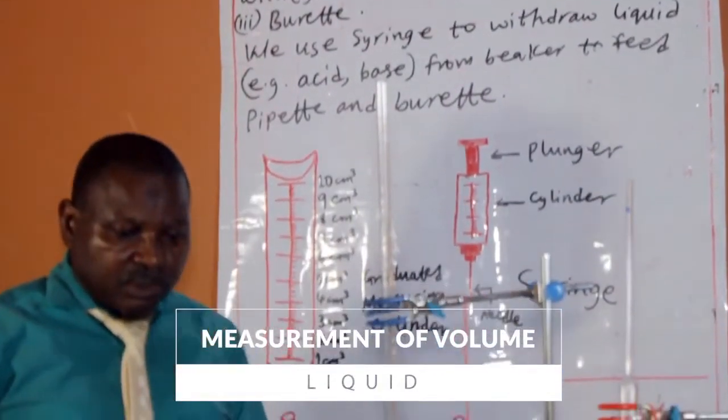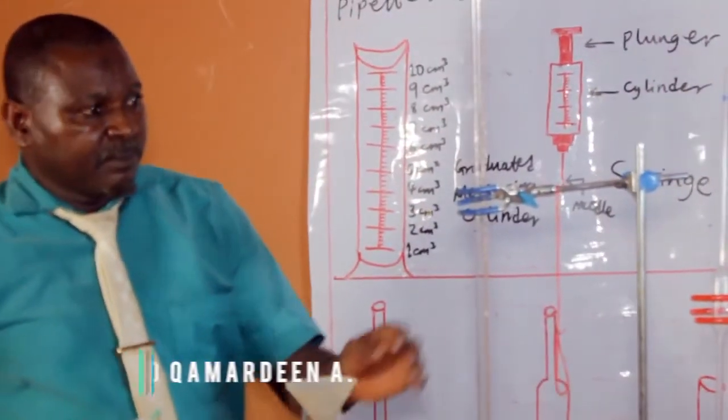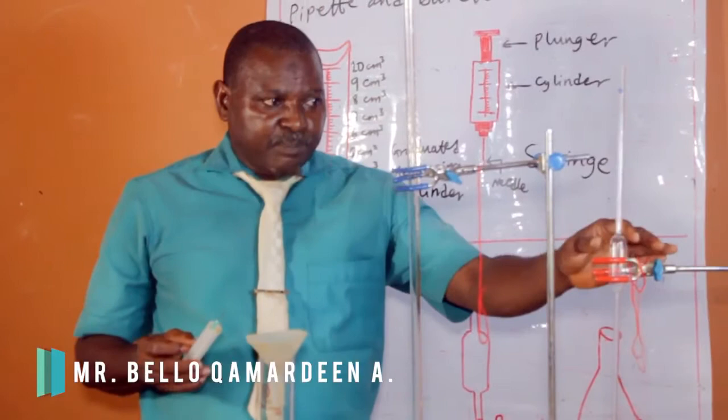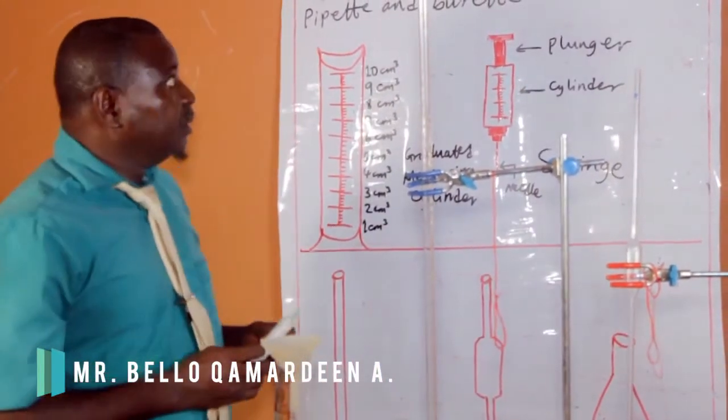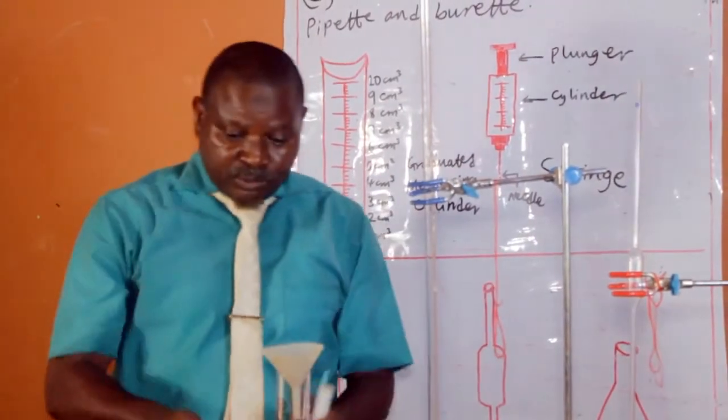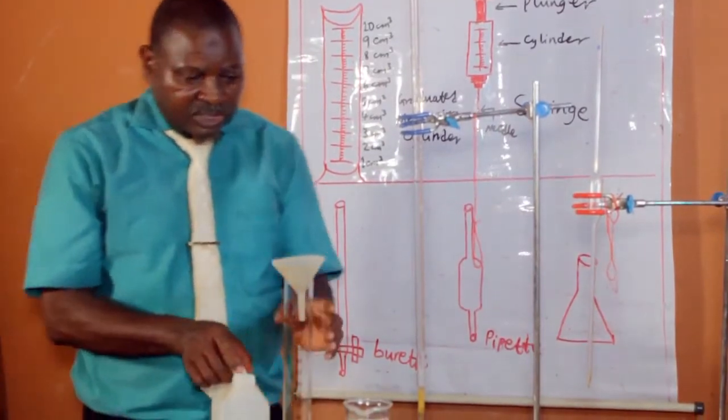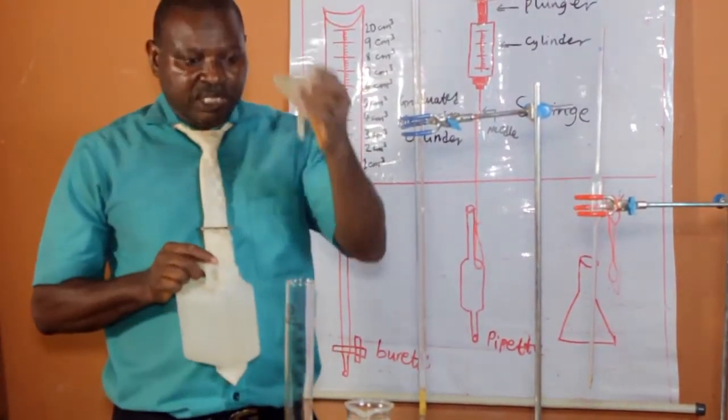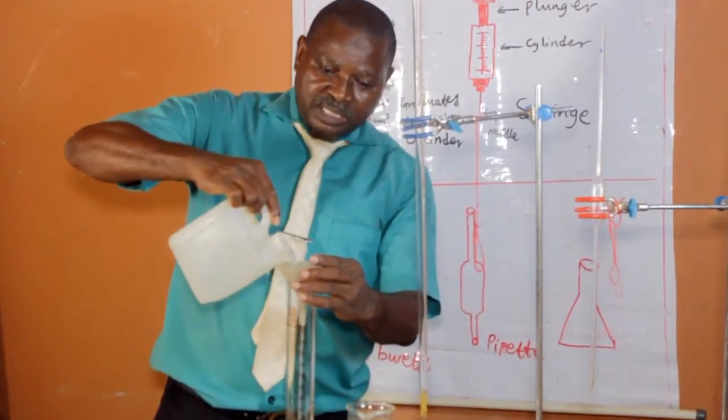We can use graduated cylinder, burets and pipettes in order to measure the volume of liquid. When you want to use a graduated cylinder, you use a funnel to direct water into the cylinder like this.